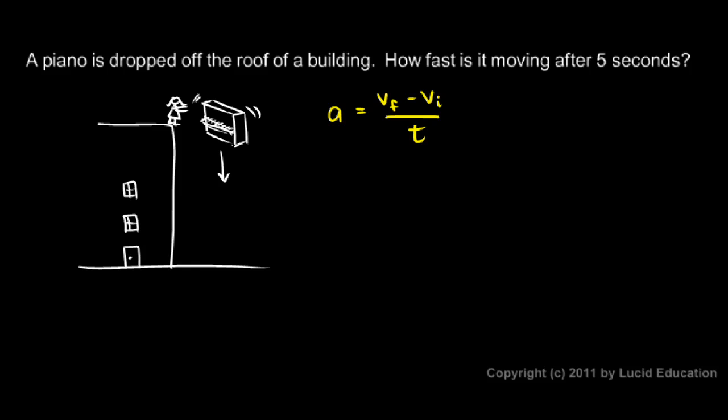Now, if she just holds the piano out there and drops it, the initial velocity is 0. So we draw an arrow through there and put a 0. And that's a standard mathematical notation indicating that that thing right there goes to 0. And if that's 0, then the equation simplifies to this. Final velocity over time.